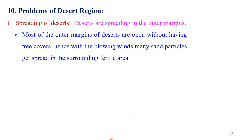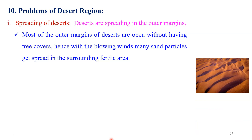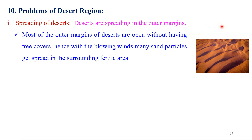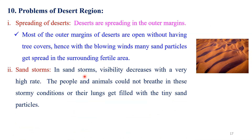If you are talking about the problems that we observe in the desert region — the first problem is the spreading of desert. Deserts are spreading at the outer margins. Most of the outer margins of the deserts are open, without vegetation cover. Hence, with the blowing winds, many sand particles get spread into the surrounding fertile area. As you can see in this picture, there is deposition of soil particles. In the desert area, there is no obstacle for the blowing winds; therefore the soil particles are carried out into the nearby area, and the desert area is spreading very fast. This is an important problem that we observe in the desert region.